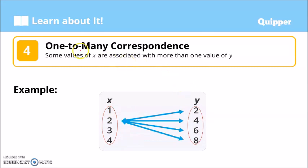Another correspondence is one-to-many. So one-to-many correspondence: some values of X are associated with more than one value of Y. One X is assigned to many values of Y. A single X. So we have two in this example, associated to two, four, six, and eight. Again, one X associated to many Y. So we call that one-to-many.